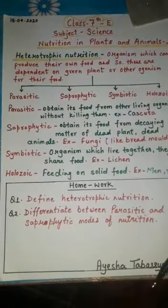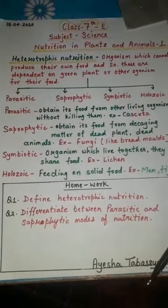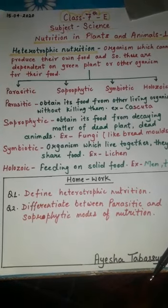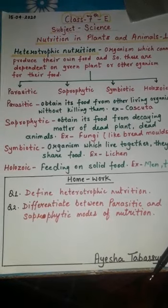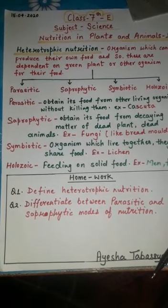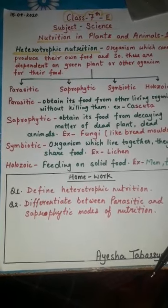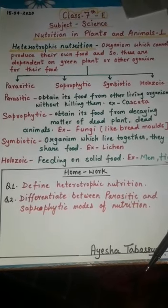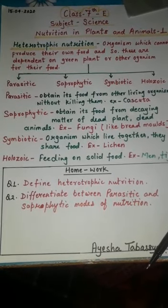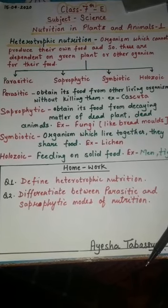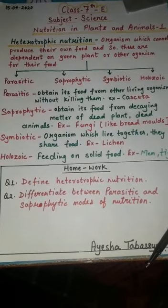According to their feeding habits, animals are divided into four categories. The first category is herbivores. Animals which eat plants and other plant products are called herbivores. For example, rabbit, cow, sheep, goat, etc.